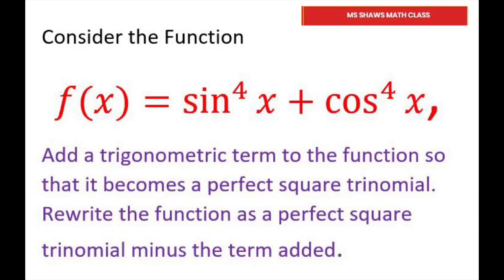Hi, everyone. Given this trigonometric function, we're going to add a trigonometric term to the function so that it becomes a perfect square trinomial. Alright, then that's the first thing. And then we're going to rewrite the function as a perfect square trinomial minus the term added. So I think just doing the problem is going to help because this is what they mean when they ask you to do that.